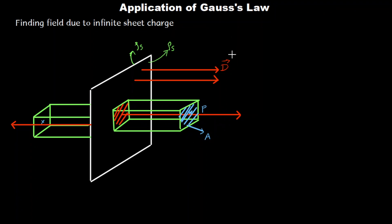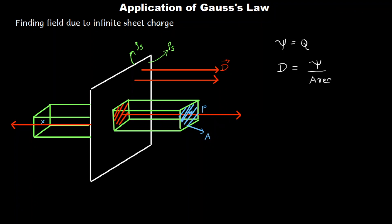According to Gauss's law, the total flux lines leaving this closed surface equals the total charge enclosed. So the total charge enclosed in this area will equal the total flux coming out. We know that psi is equal to Q. By the definition of electric flux density, D is the total flux divided by the total area — the number of flux lines divided by area gives me the flux density.